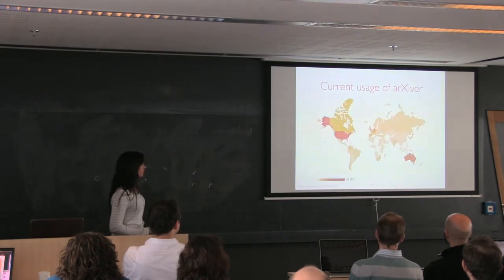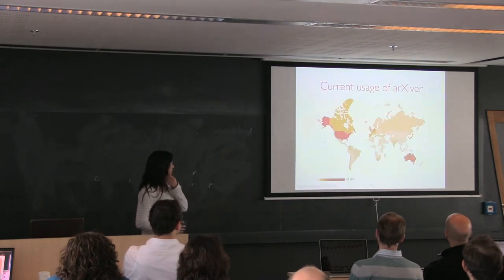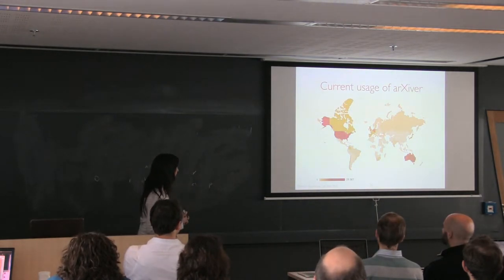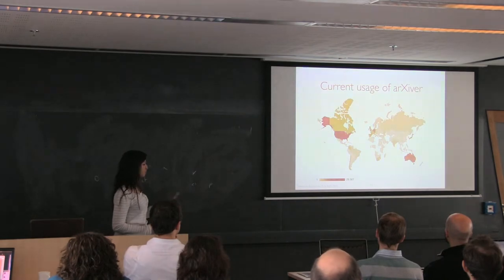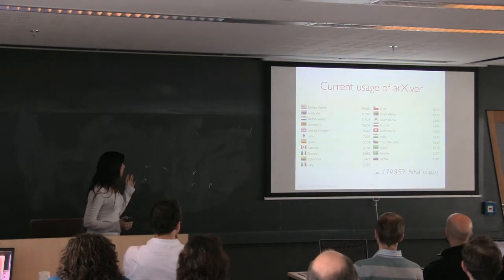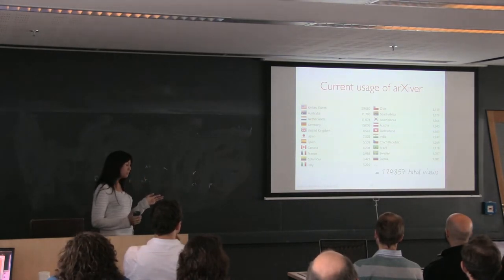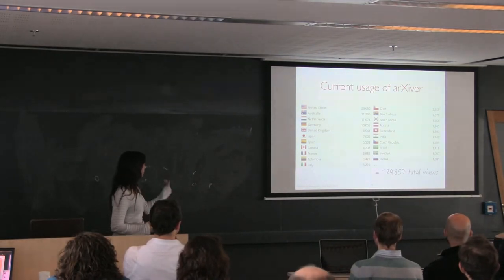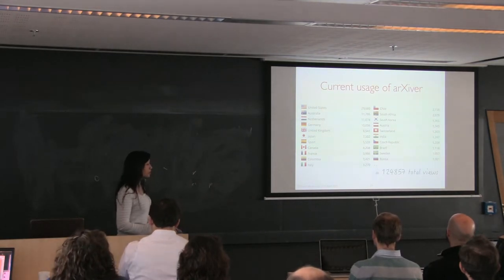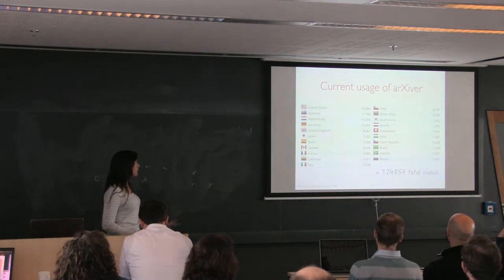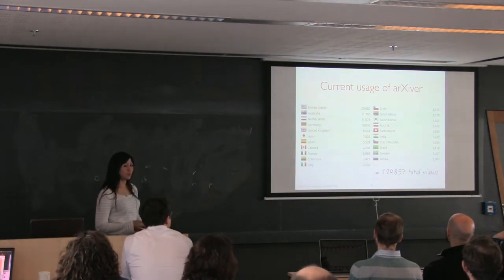This is our usage distribution across the world, color-coded by the density of views. This is since it started, and I think most of them are real. Most of the hits are genuine, so we're actually reaching real astronomers in real countries. This is the distribution of all the countries that are above a thousand views. If your country is not up there, you're not looking at Arxiver enough. In total, we've got about 124,000 views. It's not huge, but we're just happy that we have a consistent user base coming back and using it and also emailing us if things go wrong or to improve it.